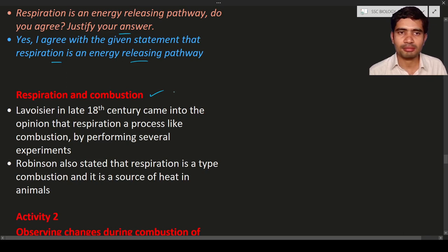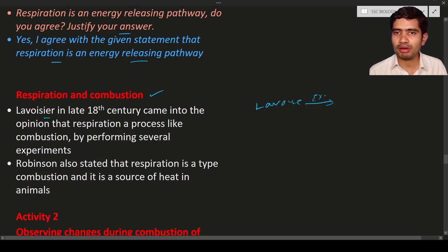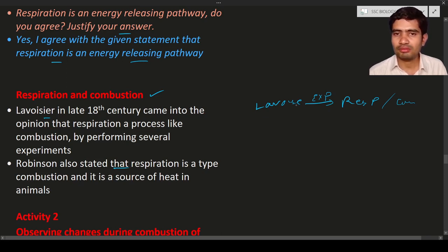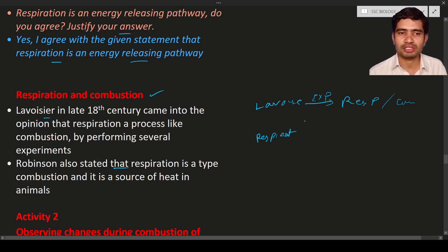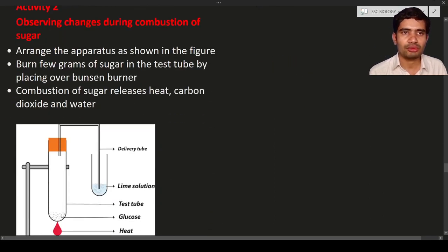What is the relationship between respiration and combustion? Both are almost similar. Lavoisier in the 18th century came to the opinion that respiration is a process like combustion, based on performing several experiments. Robinson also stated that respiration is a type of combustion and is the source of heat in animals. For example, your body maintains 37 degrees Celsius, and this is due to cellular respiration — some amount of energy is released, and that is utilized for maintaining body temperature.